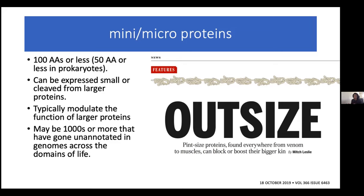They're typically either expressed small or cleaved from larger proteins. You can think of something like insulin, which starts as proinsulin, is then cleaved, and the functional form is a small protein. Whereas others, such as myoregulin in mussels, is always small.